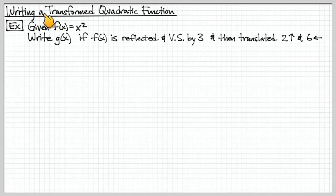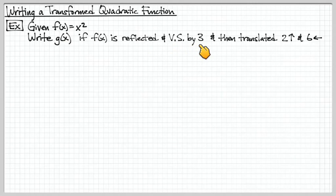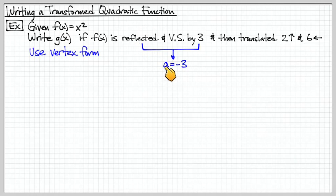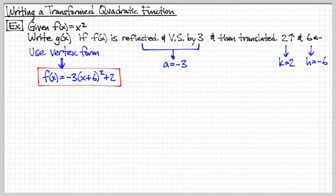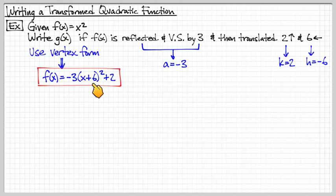Let's go the opposite direction and write some equations based on described transformations. Given the starting parent function, let's define a new function that is reflected, vertically stretched by a factor of 3, translated up by 2, and left by 6. Using vertex form, the A value is negative because it's reflected, and also vertically stretched by 3, giving us negative 3. The translation up by 2 gives our K value, and since it goes to the left, H is negative 6. So plugging this in, we have A equal to negative 3, x plus 6 for the left translation, and plus 2 for the upward translation — vertex form is a very convenient form.